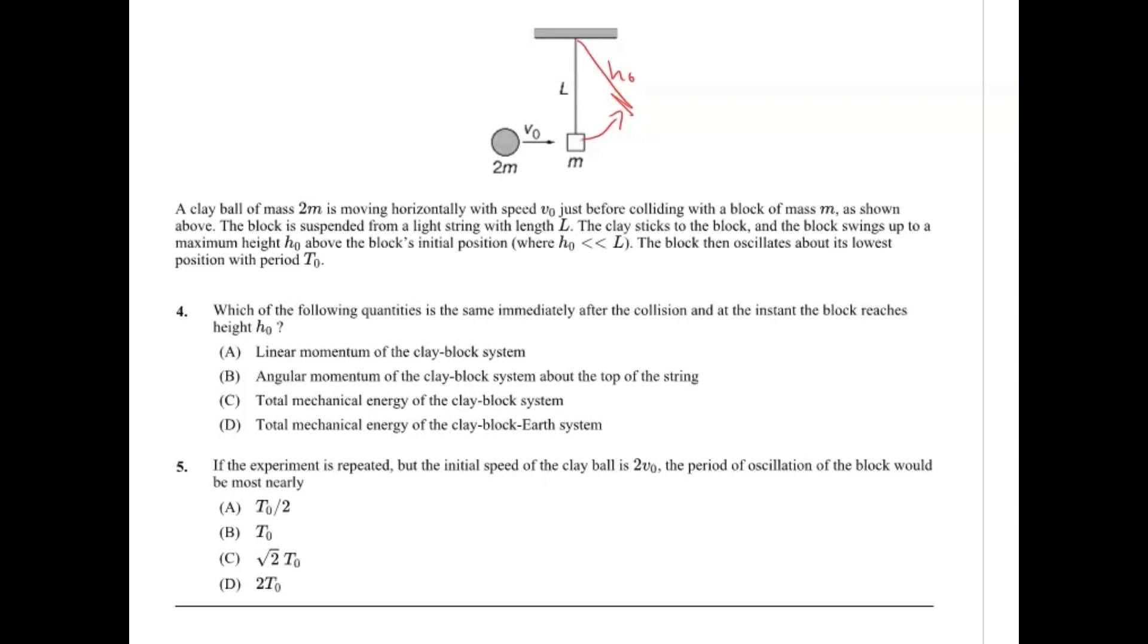So choice A says linear momentum of the clay block system. Linear momentum isn't necessarily conserved here because there's external forces, the force of gravity. So it can't be A. B says the angular momentum of the clay block system about the top of the string. It's a similar case here. I don't think it's B because when you're talking about torque, you're also going to have the external force of gravity, so that's going to not conserve that angular momentum. C says total mechanical energy of the clay block system might be it. D says total mechanical energy of the clay block earth system.